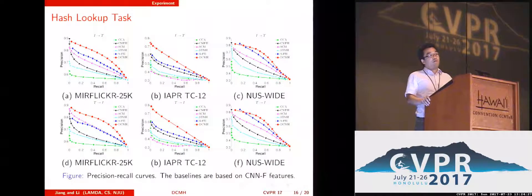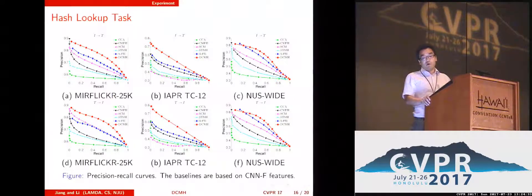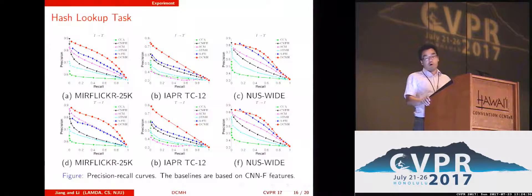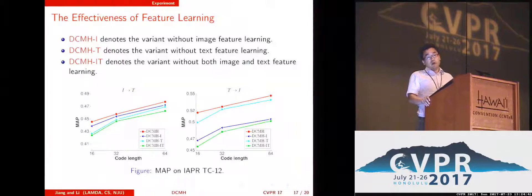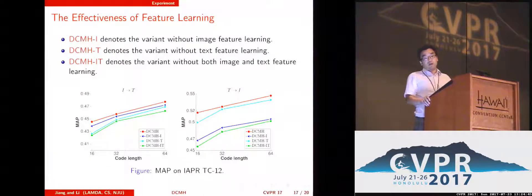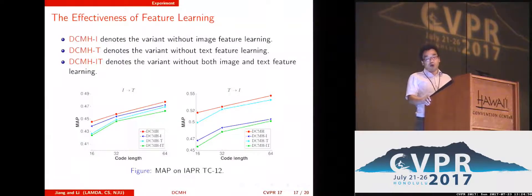Second, we perform hash lookup tasks on these datasets and report the precision-recall performance. We can also find that our model outperforms all the other baselines. We also compare our model with several variants, and we find that both image feature learning and text feature learning are essential for our model to achieve good performance.